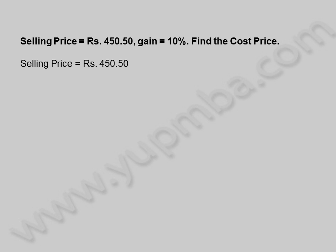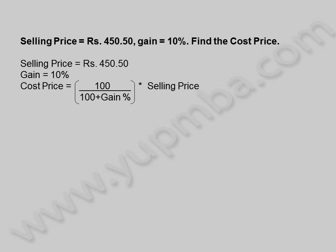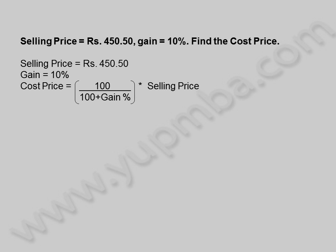Selling Price is equal to 450.50 Rupees. Gain is equal to 10%. Cost Price is equal to 100 divided by (100 plus gain percentage) into Selling Price. Substituting values in the above formula to determine the cost price.